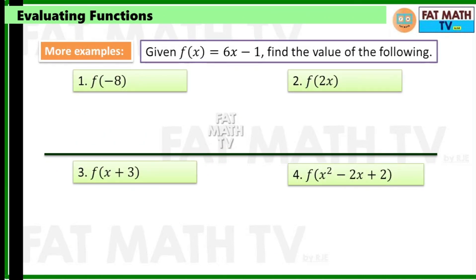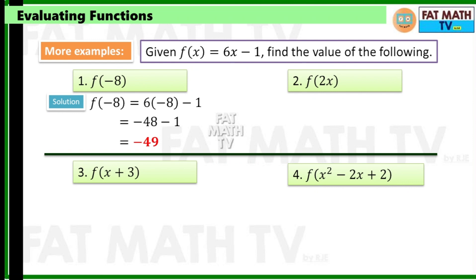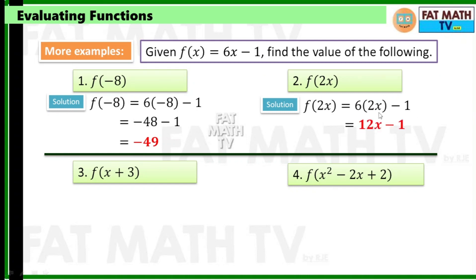More examples with the same function f of x equals 6x minus 1. For f of negative 8: 6 times negative 8 minus 1 equals negative 48 minus 1, which is negative 49. Now numbers 2, 3, and 4 are no longer real numbers but expressions in terms of x — just replace x with that expression. So f of 2x equals 6 times 2x minus 1, which gives 12x minus 1.